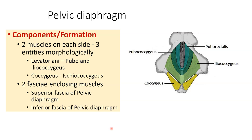There are two components in the levator ani muscle: the pubococcygeus and iliococcygeus. The coccygeus muscle is also known as the ischiococcygeus. The levator ani contributes to the anterior part of the pelvic diaphragm and the coccygeus forms the posterior part. From anterior to posterior, you will see the levator ani — pubococcygeus part first, followed by the iliococcygeus part — and then posteriorly the coccygeus or ischiococcygeus muscle.